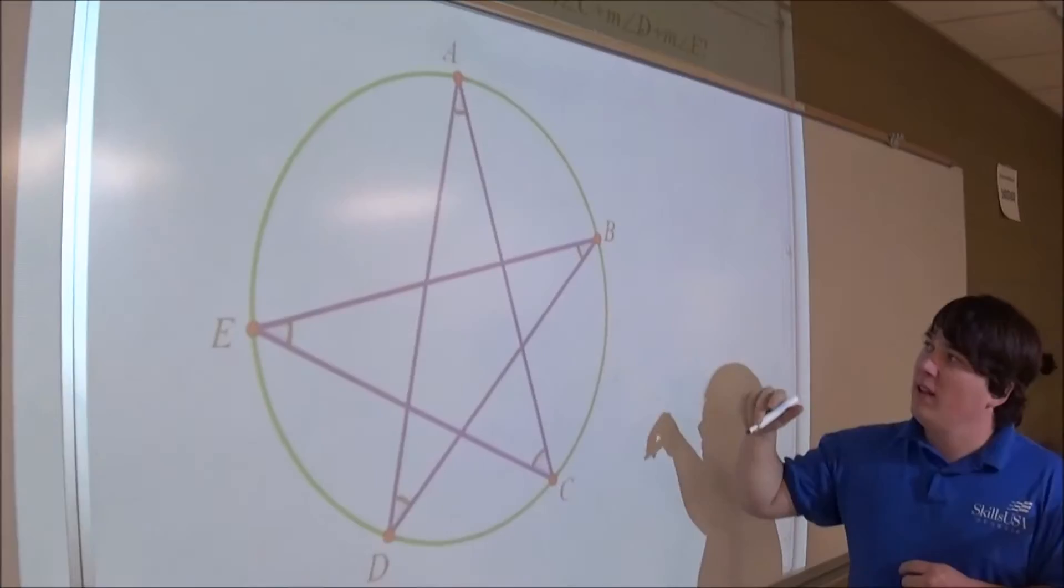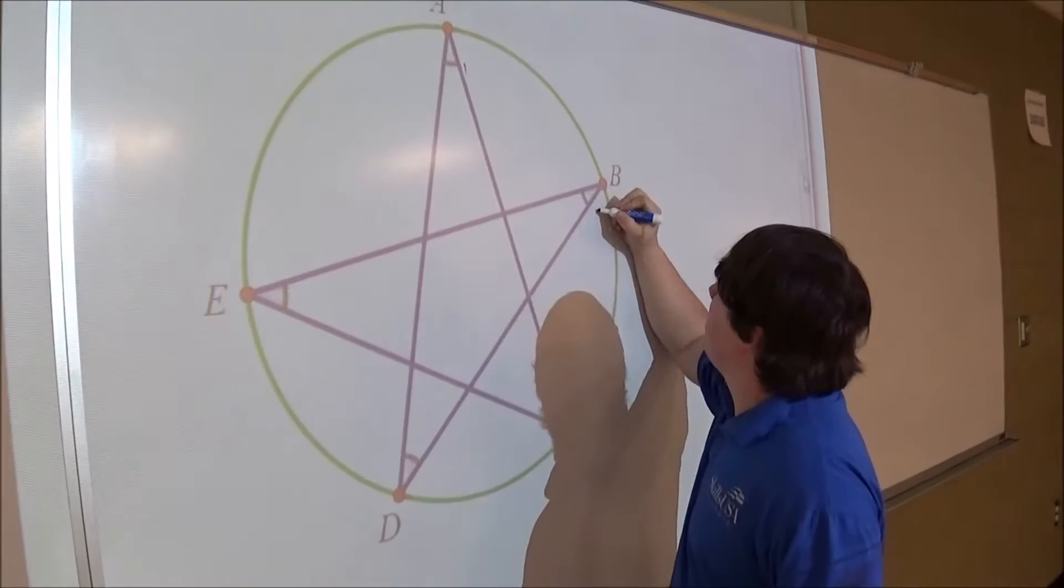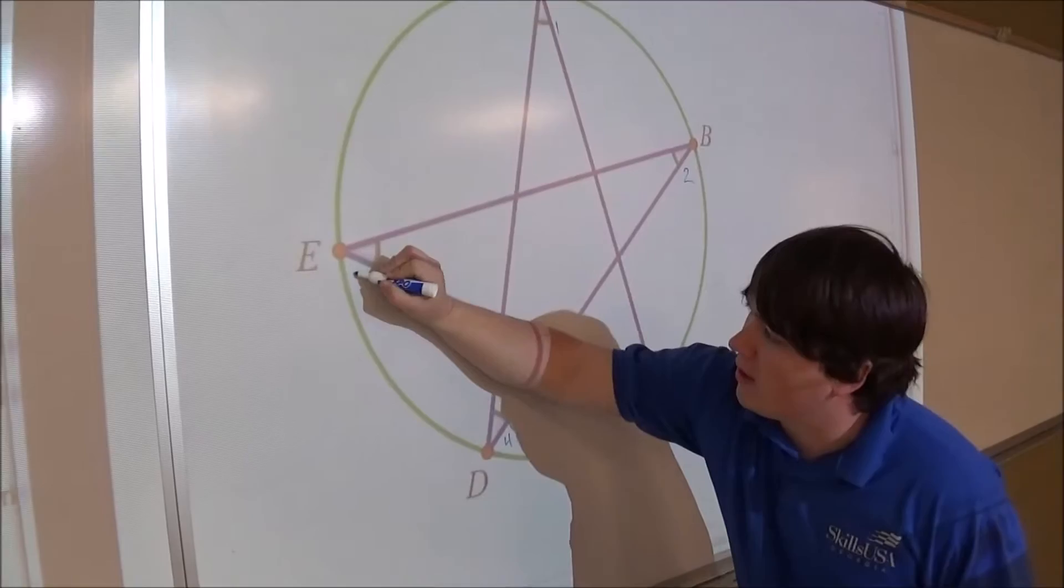The question is asking what is the sum of the five angles listed: A plus B plus C plus D plus E. What is the sum of all five angles?